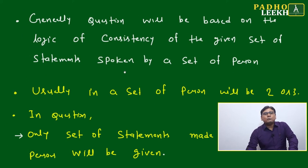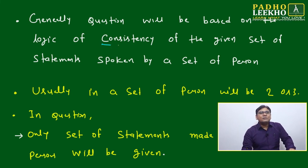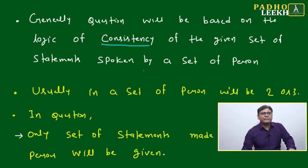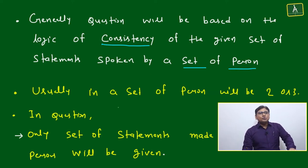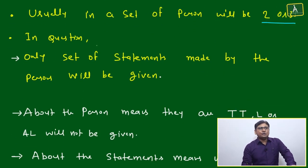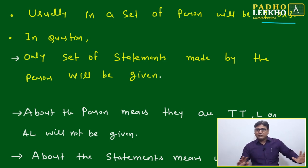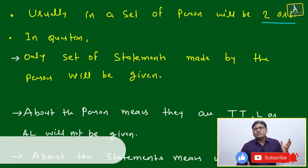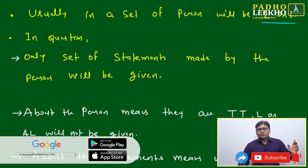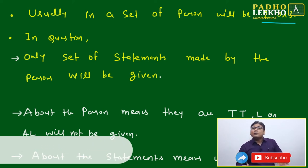Now, what type of questions will come? Questions are generally based on the consistency of a given set of statements spoken by a set of persons — usually two or three persons. Only the set of statements made by the persons will be given in the question; it will not disclose which person is a truth teller, liar, or alternator.